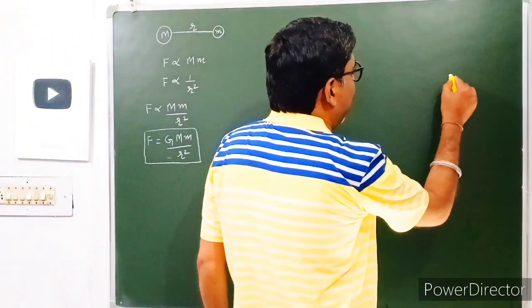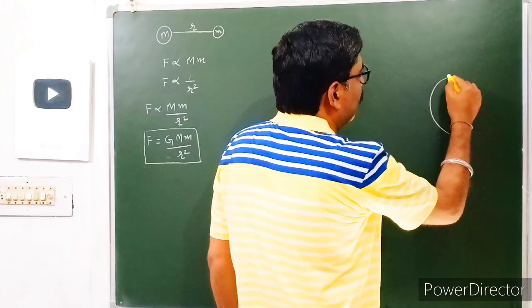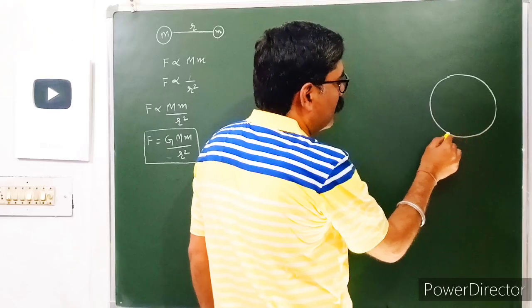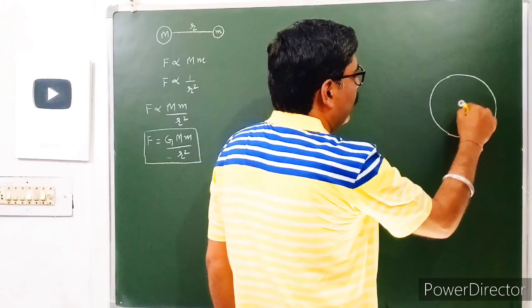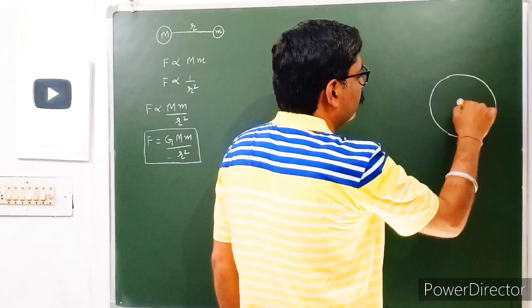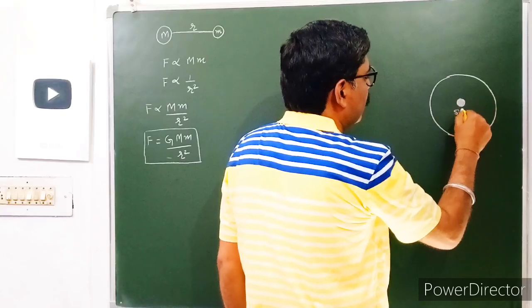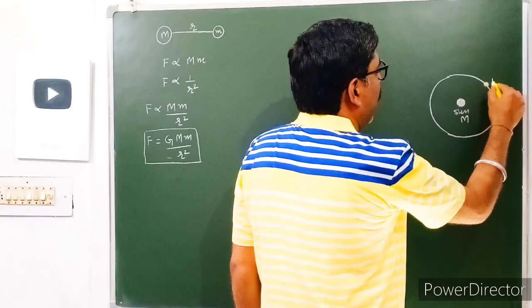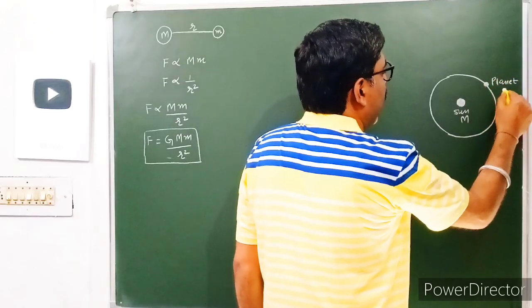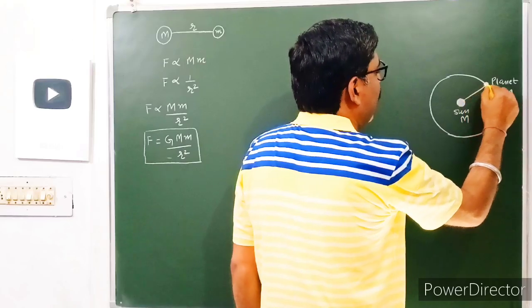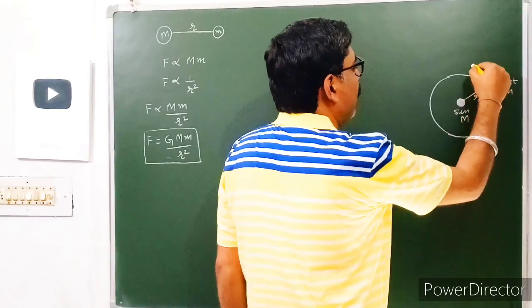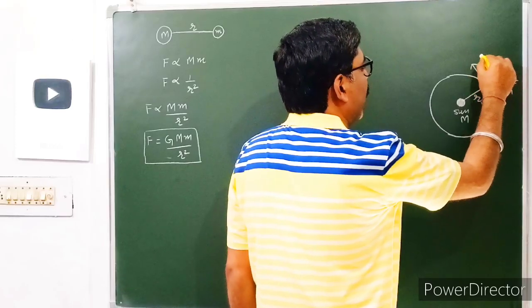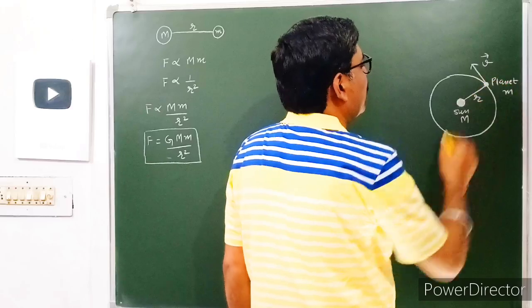First of all, we have to take a planet which is revolving around the sun in a circular orbit. Suppose the sun is lying at the center of the circular orbit — this is the sun having mass M and this is the planet having mass m. Let the planet be at a distance r from the sun, and at a particular instant of time, let the velocity of the planet be vector V, which will be tangential to the circular orbit.